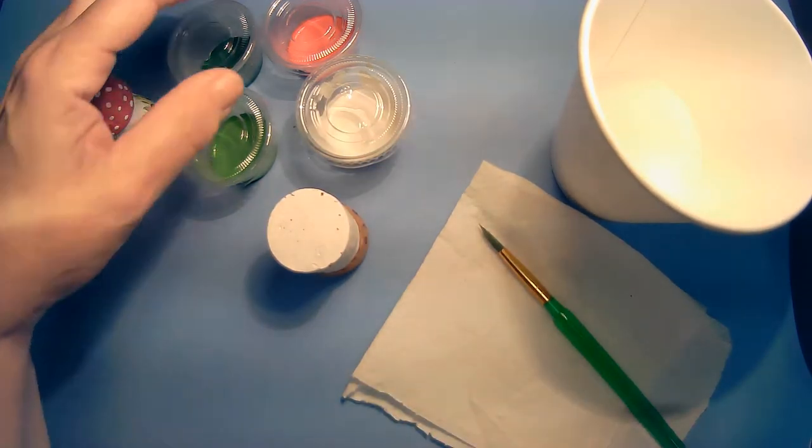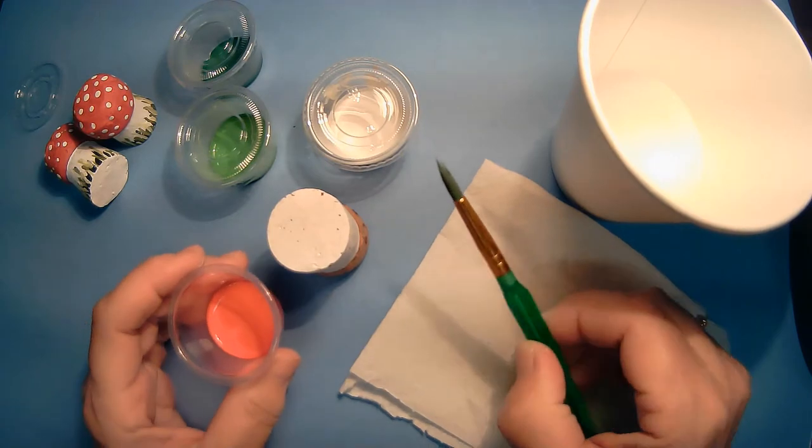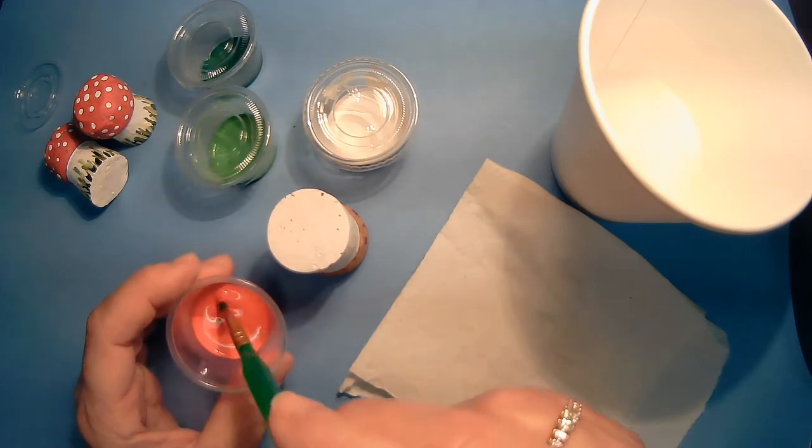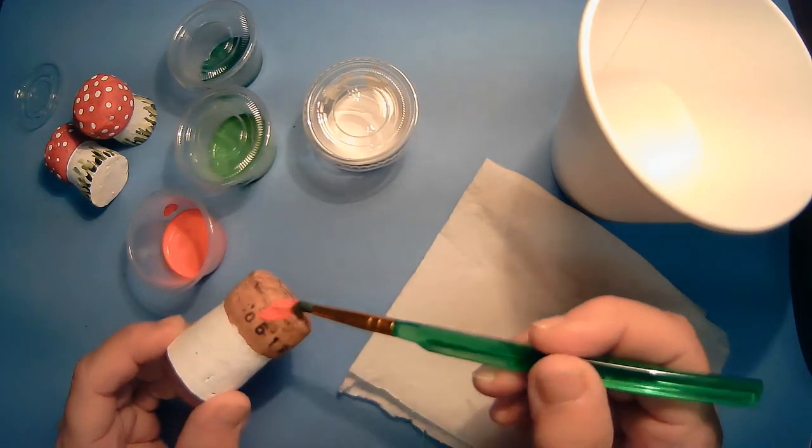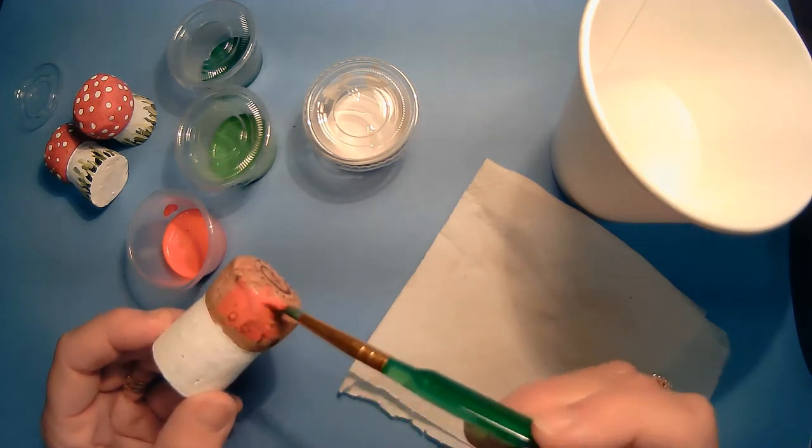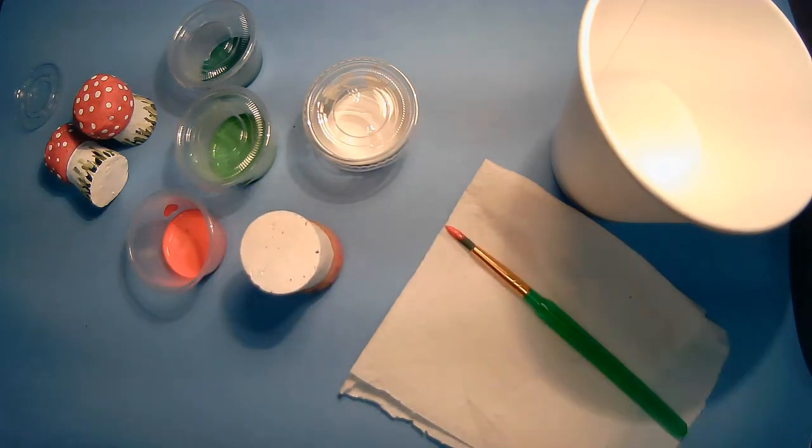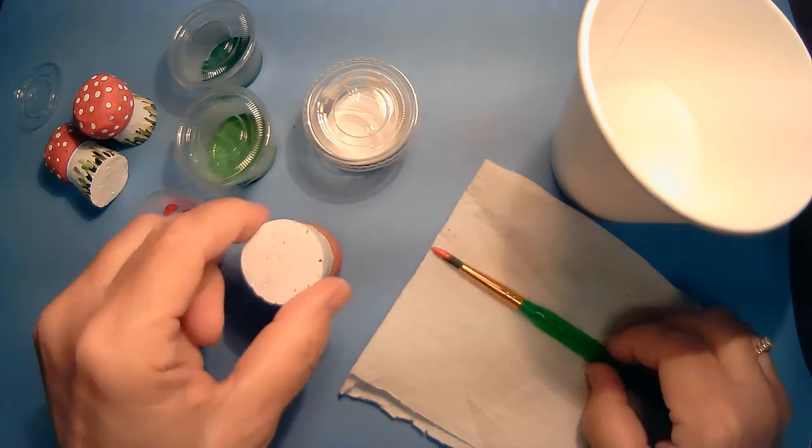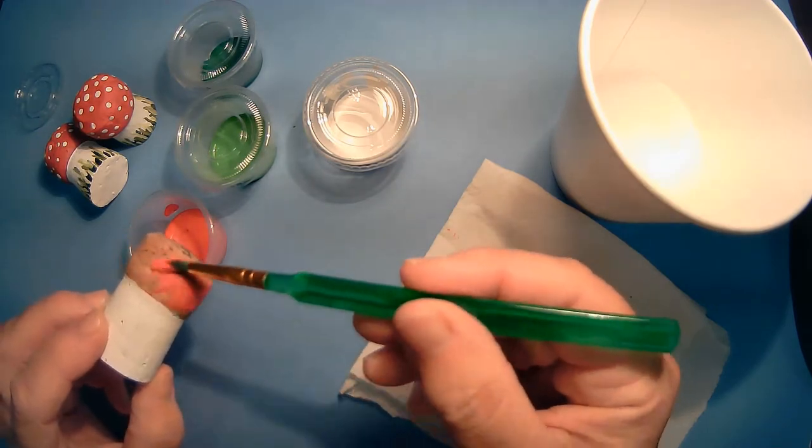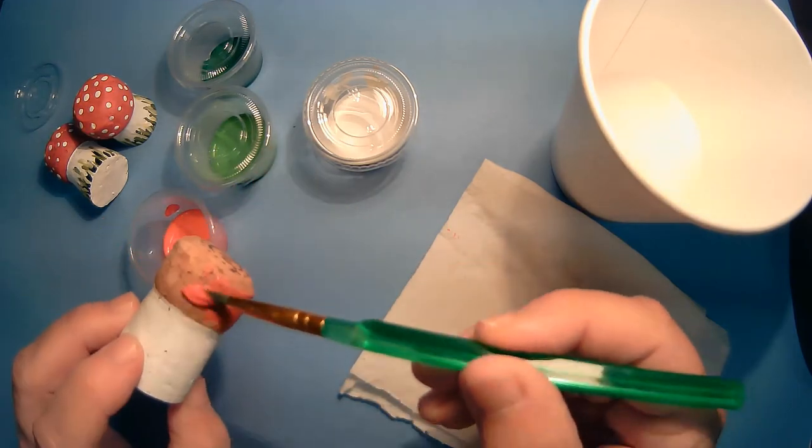Now that's dry, the next thing we're going to do is we're going to open the red container and I have cleaned my brush. I have no white, nothing white on my brush. And we are going to paint the top of the mushroom.